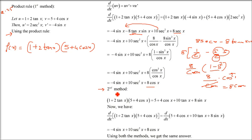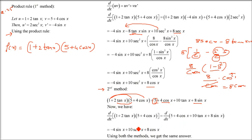Now let us multiply normally. (1 + 2tanx)(5 + 4cosx) expands to: 5 + 4cosx + 10tanx + 8tanx·cosx. Since tanx·cosx = (sinx/cosx)·cosx = sinx, we get: 5 + 4cosx + 10tanx + 8sinx. Now differentiate: 5 → 0; derivative of 4cosx is −4sinx; derivative of 10tanx is 10sec²x; derivative of 8sinx is 8cosx. So the result is exactly the same.